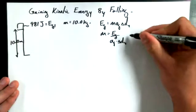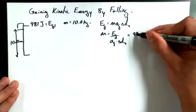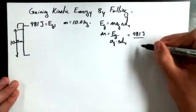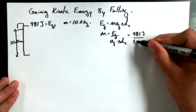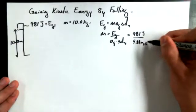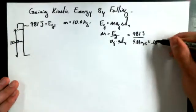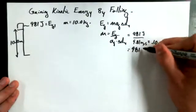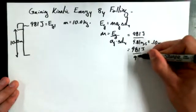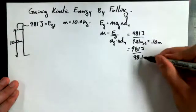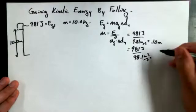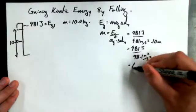And I can plug in my values and I can say, okay, well, EG is 981 joules divided by 9.81 meters per second squared times 10 meters. That's 981 joules divided by 98.1 meters squared per second squared. And you end up getting 10 kilograms.